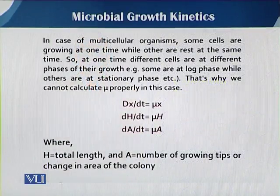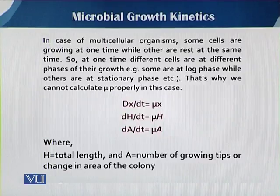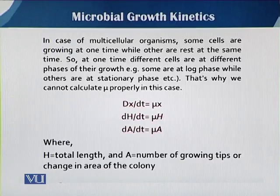But in the case of multicellular organisms, some cells are growing at one time while others are at rest at the same time. At any one time, different cells are at different phases of their growth — some are at log phase while others are at stationary phase. That is why we cannot calculate mu properly in that case.